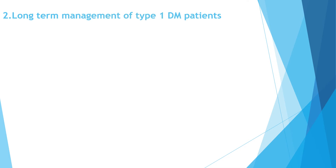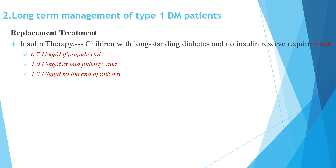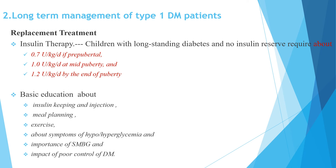Regarding long-term management of type 1 DM: children with long-standing diabetes and no insulin reserve require about 0.7 international units/kg/day if pre-pubertal, around 1 international unit/kg/day in early puberty, and 1.2 international units/kg/day at the end of puberty. Doses should be adjusted based on patient response and self-monitoring of blood glucose or HbA1c on follow-up. Basic education about insulin storage and injection, meal planning, exercise, symptoms of hypoglycemia, and the importance of self-monitoring should be given to both the family and patient.